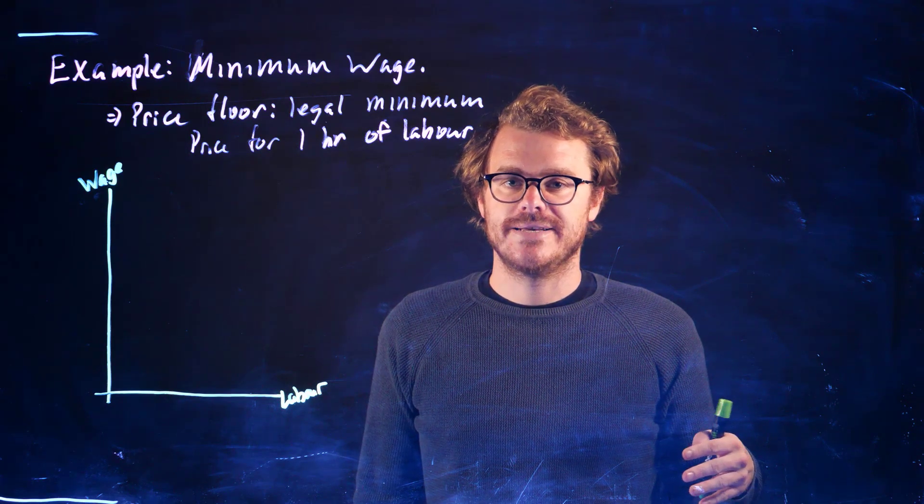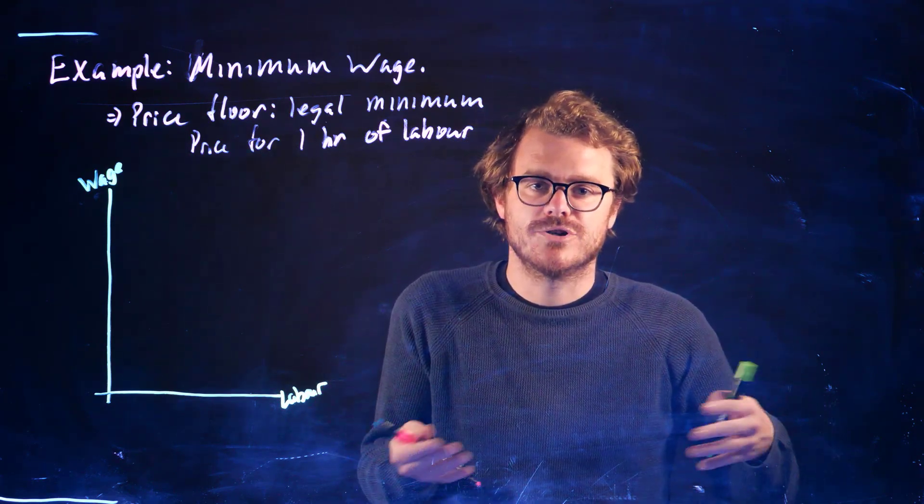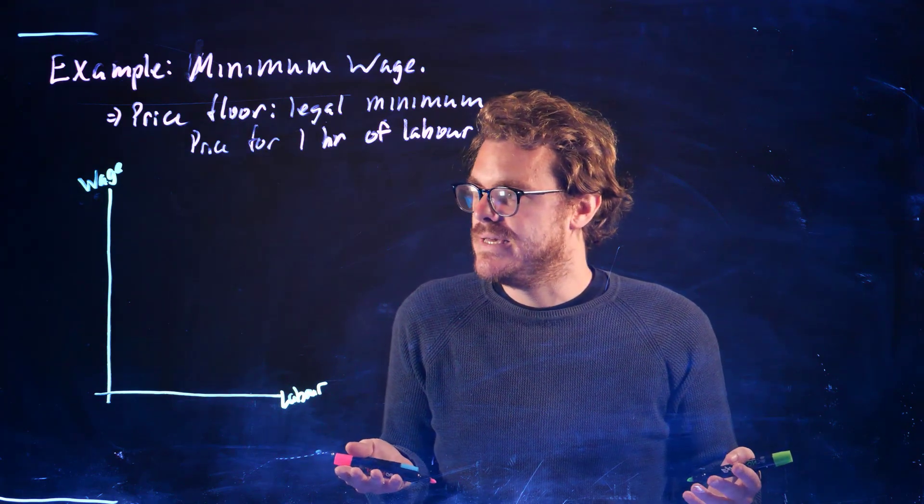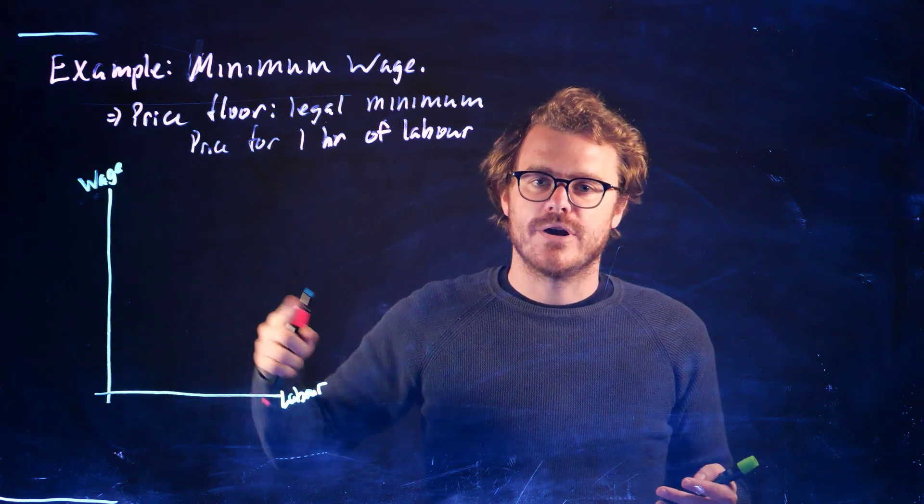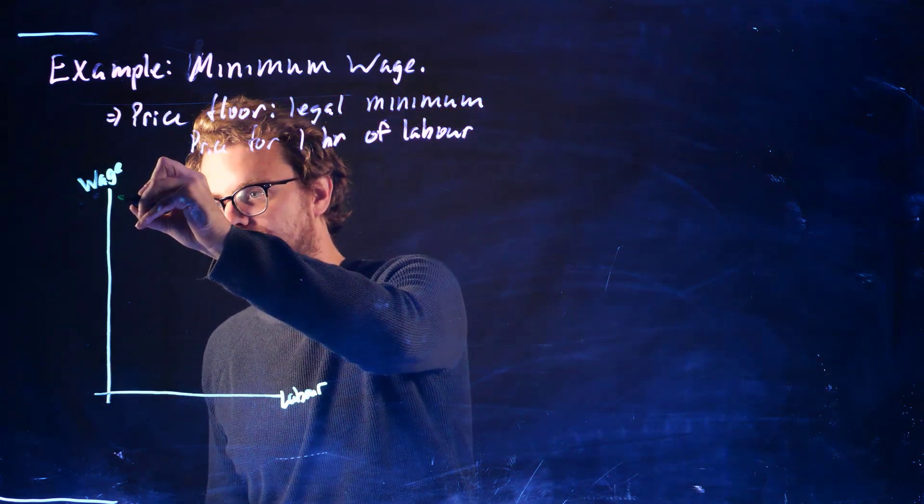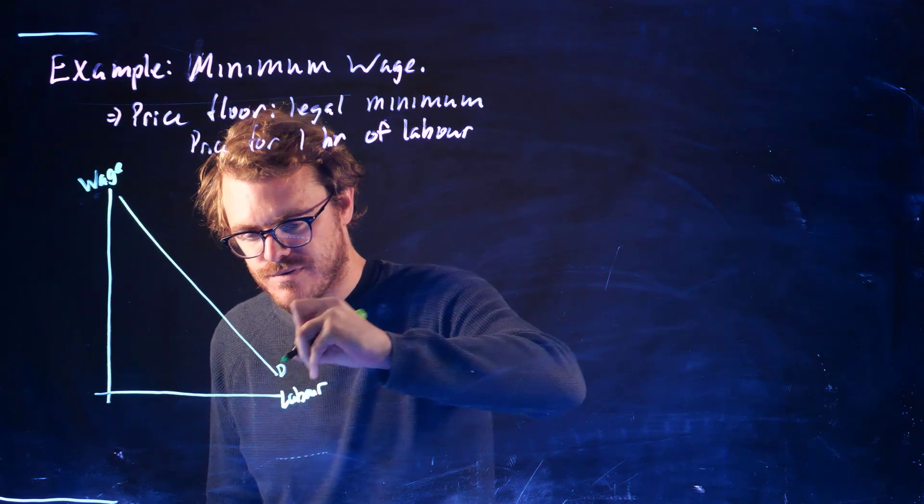Now remember that the demand for labor is going to be the firms that are trying to pay for labor, trying to get people to work for them. Probably the higher the wage, the less labor they're going to be demanding, so we have this downward sloping demand curve for labor.